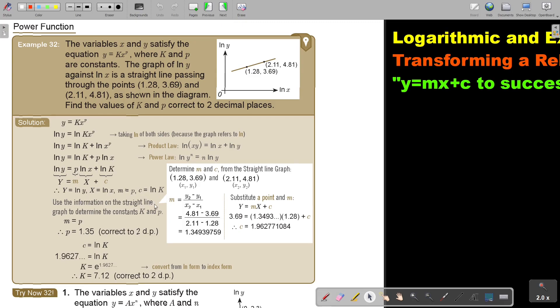Use the information on the straight line graph to determine the constant k and p. So, m is equal to p. Basically, I can just say that the value of p is 1.35. But don't forget, where did I get this 1.35? I must work it out. How do I get m? I take the two points and I work out the gradient.